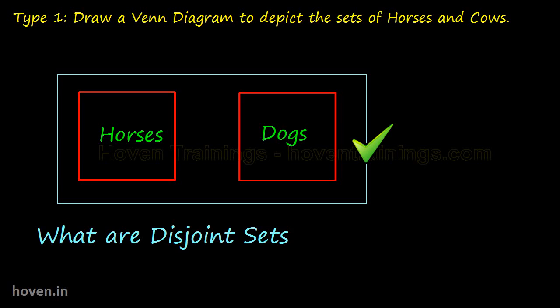What are disjoint sets? Sets of two independent things that do not have anything in common are called disjoint sets. So in this case, horses and dogs — they are disjoint.